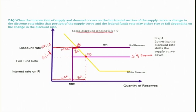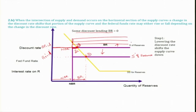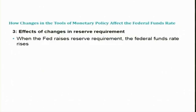What we have seen is that when the intersection of the supply and demand curve occurs on the horizontal section of the supply curve, the discount window makes an impact in the Fed fund market. A reduction in the discount rate lowers the Fed fund rate. Similarly, if the Fed increases the discount rate, the supply curve shifts upwards — S2R, S3R, S4R — as the Fed keeps increasing the discount rate. Above a certain point, the new intersection moves such that the Fed fund rate increases.